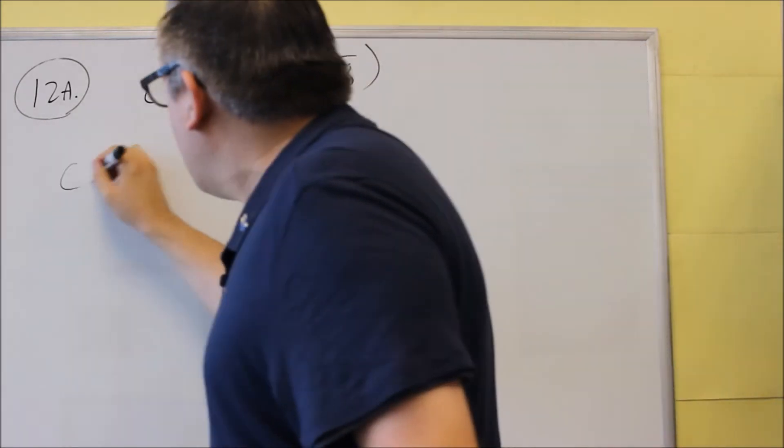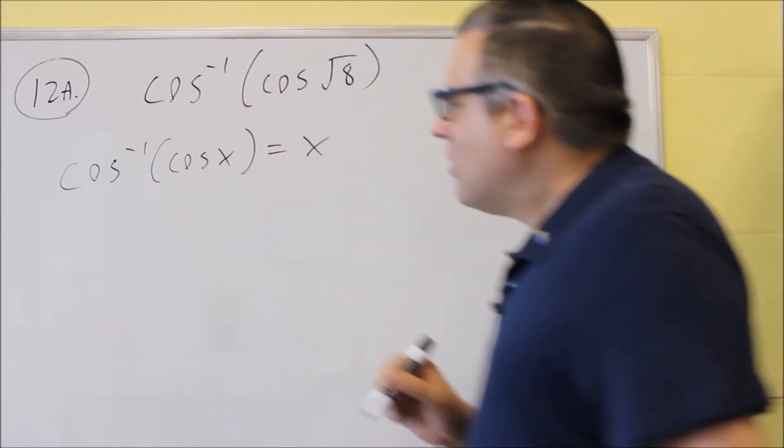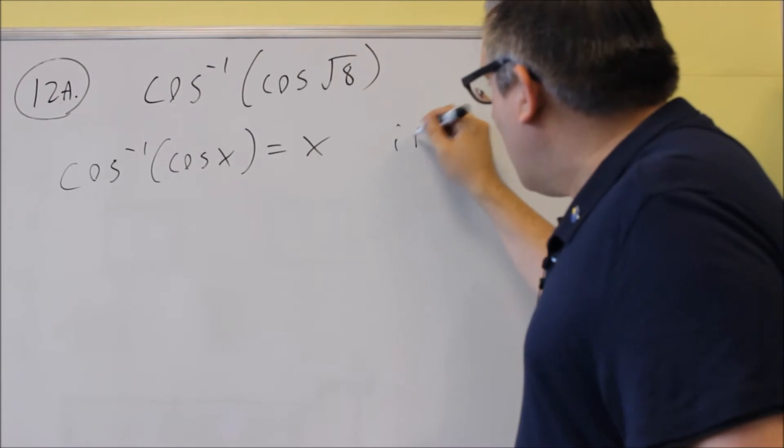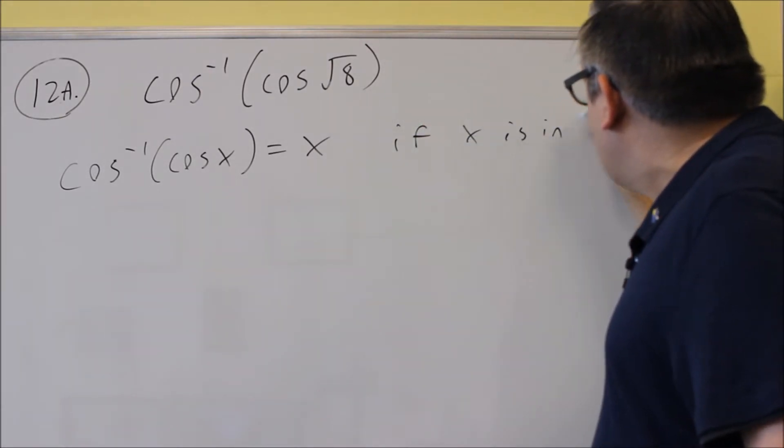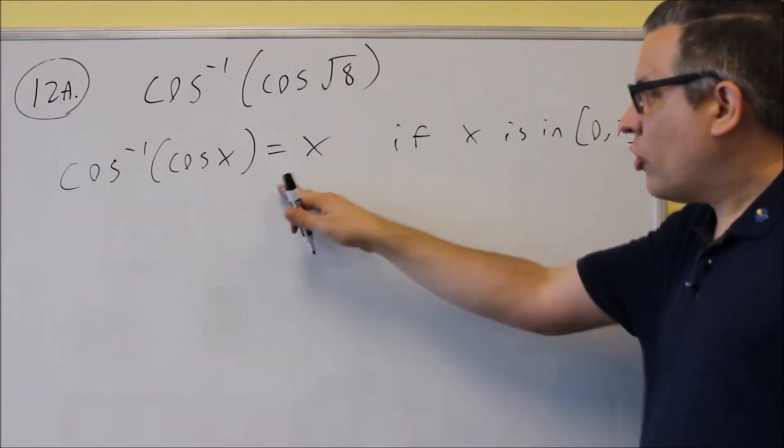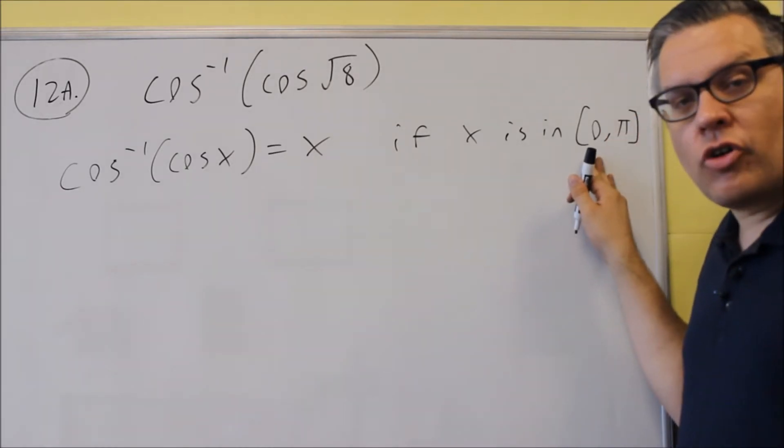One of the rules in the notes is if we have inverse cosine of cosine of x, that equals x if x is in the interval from 0 to π. That's the only way you can allow that to cancel out, if x is between 0 and π.